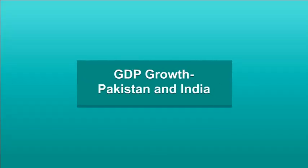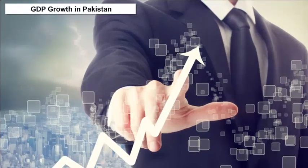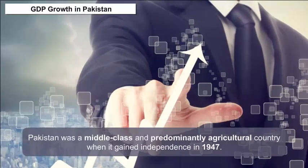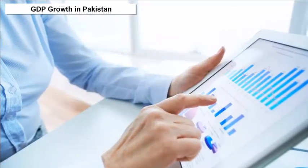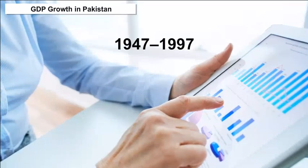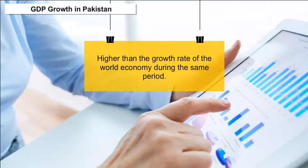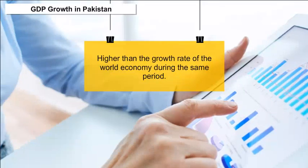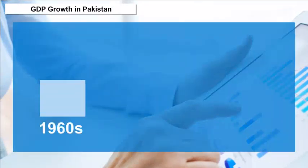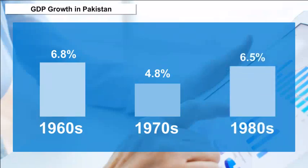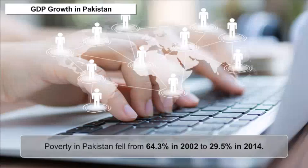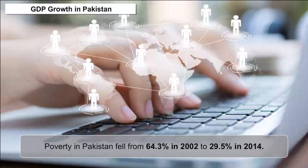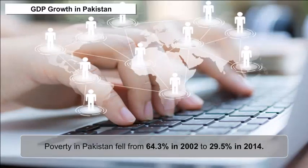GDP Growth — Pakistan and India: Pakistan was a middle-class and predominantly agricultural country when it gained independence in 1947. Pakistan's average economic growth rate in the first five decades (1947 to 1997) has been higher than the growth rate of the world economy during the same period. Average annual real GDP growth rates were 6.8% during the 1960s, 4.8% in the 1970s, and 6.5% in the 1980s. Recently, according to World Bank data, poverty in Pakistan fell from 64.3% in 2002 to 29.5% in 2014.